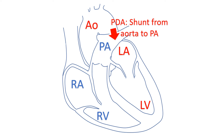This diagram illustrates a left-to-right shunt across a patent ductus arteriosus. Normally, the ductus arteriosus, which is present in the fetus, closes soon after birth because of higher oxygen saturation when the lungs start functioning. The strongest stimulus for constriction of a mature ductus is oxygen. The ductus arteriosus in a premature infant does not respond as well to oxygen, and that is why the incidence of PDA is higher in preterm infants.